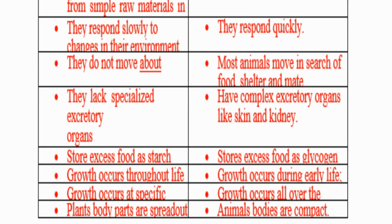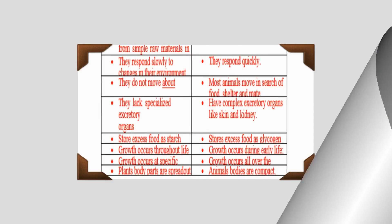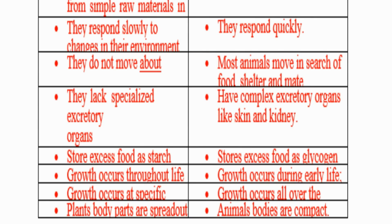That is how you list the differences between plants and animals. When it is difficult to recall the differences, imagine a cow and a tree side by side, look at them physically, and you can easily identify differences — for example, plant body parts are spread out while animal body parts are compact.